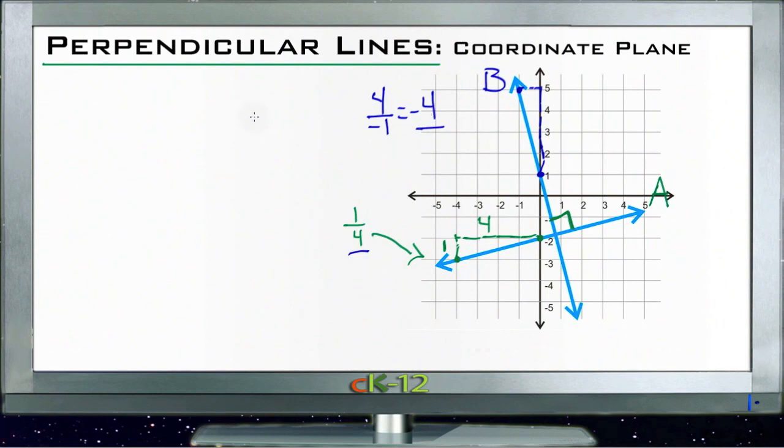Because of course negative four could be written like we did here as negative four or four over negative one or negative four over positive one, either way is fine. If we flip that over we get our one over four and then if we change the sign, negative becomes positive.